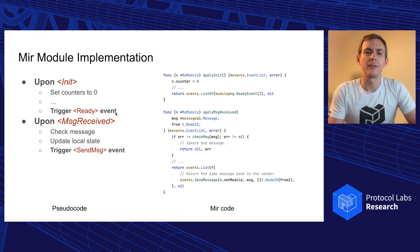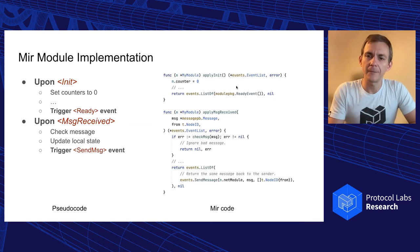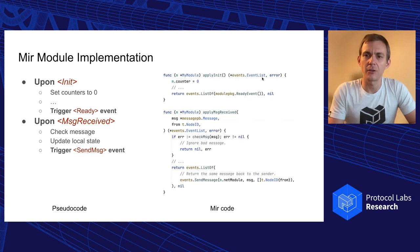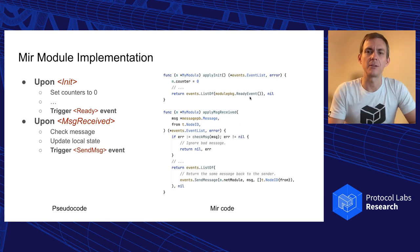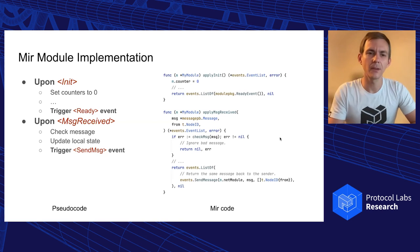The events triggered by the implementation are returned from the corresponding handler functions. Whatever the handler function returns is considered to be triggered by that module. All these event handlers return, apart from an error, a list of events — because they might trigger more than one event. When the computation is done, we return a list of events, in this case only the ready event, and MIR will route this event to the appropriate module. The message-received handler works analogously.